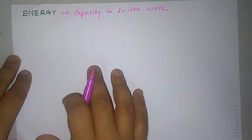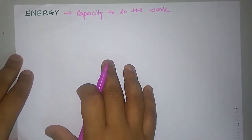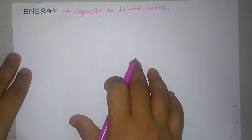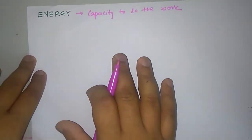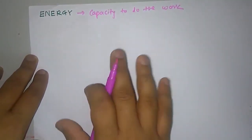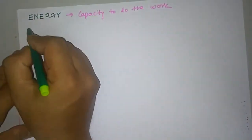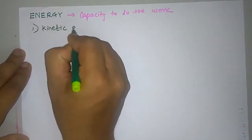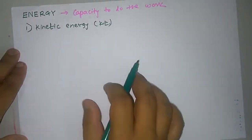There are different types of energy: mechanical energy, electrical energy, thermal energy, and wind energy. In this chapter, we are going to concentrate on mechanical energy. First we will study kinetic energy and then we will go for potential energy.